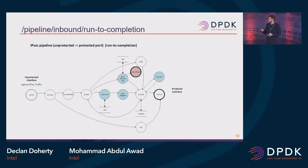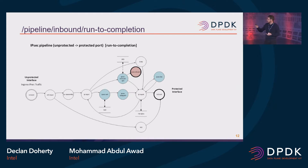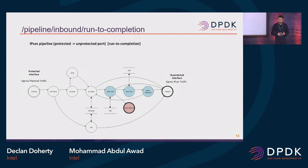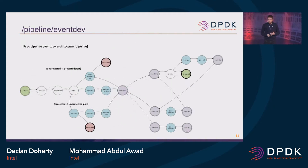In terms of how we see the pipelines looking, this is just a simplified view of an unprotected to protected port flow. On the inbound side, encrypted IPSec packets come in, you have your IPSec SADB module, then after classification, handing out to your IPSec data path processing, and then through your IP output stage and then to your TX burst. I'm just trying to illustrate that we want to make the library architecture modular so that if you have an existing application doing all of this already, you might just be interested in plugging in the data path part.